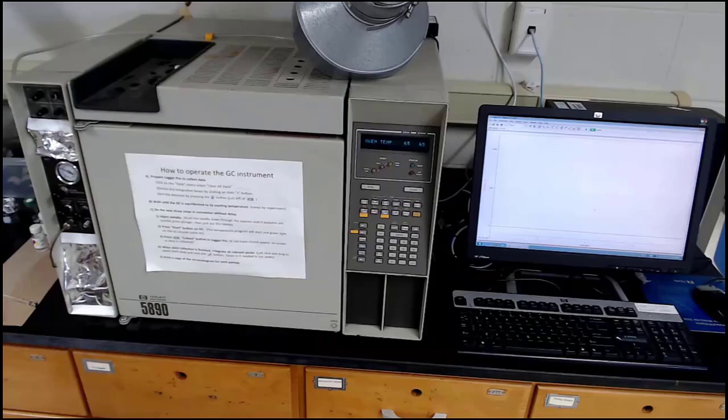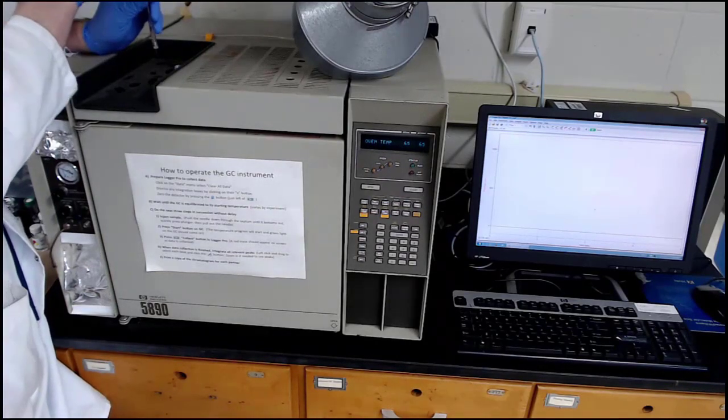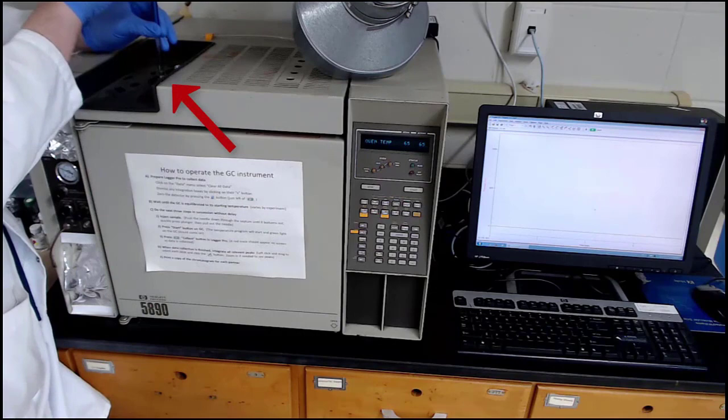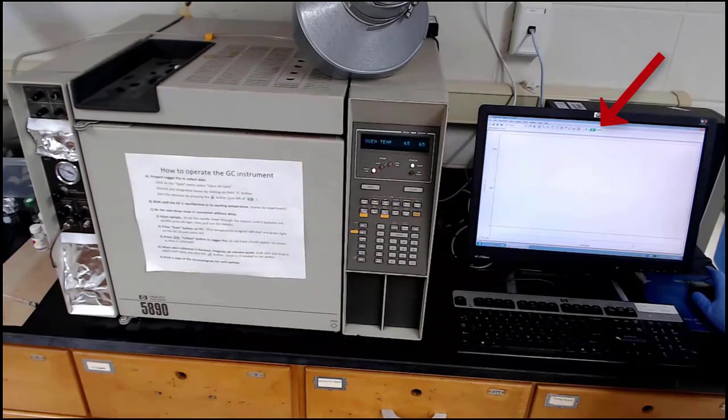The injector port on the GC is on the top of the instrument. Push the needle of the syringe until it bottoms out, then press the plunger down to inject the sample. Press start on the GC instrument, and then press start on the computer on LoggerPro to get the data station collecting data.